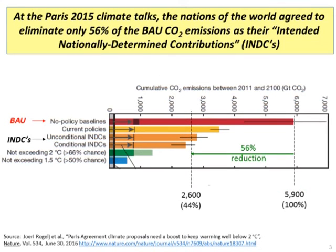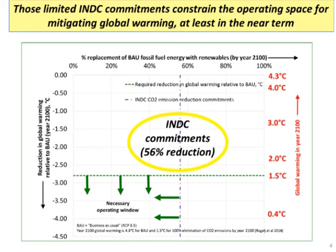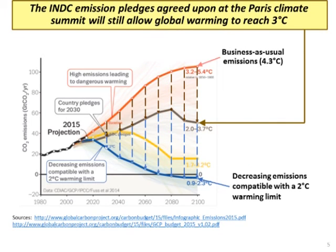There's a constraint on what we as a world can do, at least in the near term. As you probably know, in 2015 most countries of the world got together in Paris and agreed on what are called the Intended Nationally Determined Contributions to mitigating global warming - mainly how much CO2 emissions the countries agreed to cut. Basically they agreed to reduce their CO2 contributions from fossil fuels by 56 percent. This kind of defines what I'm calling the necessary operating window.